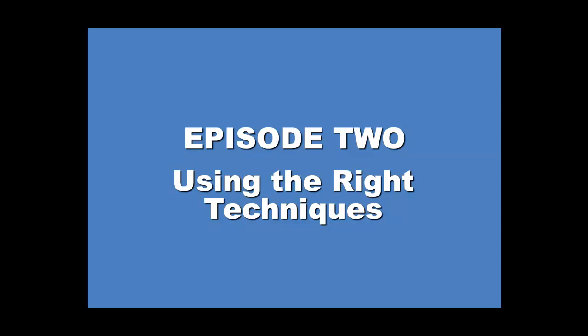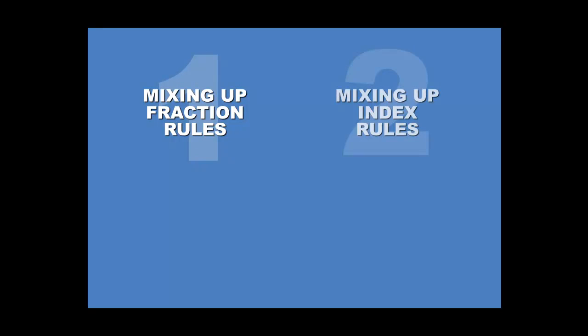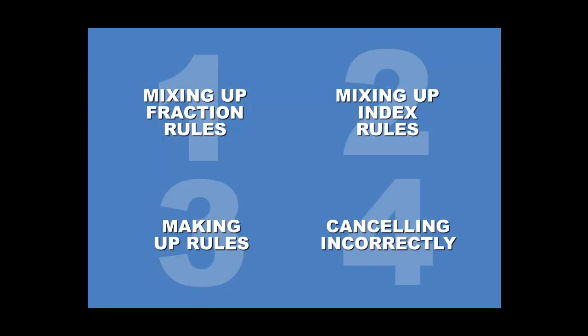There are four things we'll look at: starting with mixing up the rules for dealing with fractions, how you can learn to use the index rules correctly, what happens if you use leaps of logic to make up your own rules which may or may not work, and finally what happens when you're cancelling items from the top and bottom of fractions.